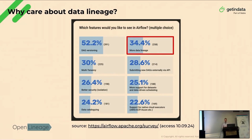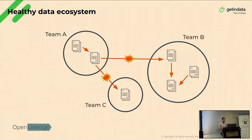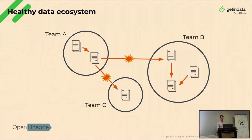Why should you care about data lineage? First, it's the second most requested feature in the latest Airflow survey. But the main reason is that our data culture has evolved. With cloud infrastructure and no-code tools, people from different teams — including non-technical ones — are unable to collaborate on data processes within the entire company. This can lead to issues like data reliability, maintaining data contracts, and providing equal access to information. We need a holistic view of the entire organization to maintain a healthy data ecosystem.